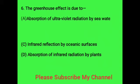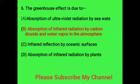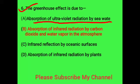Question six: the greenhouse effect is due to - option A: absorption of ultraviolet radiation by seawater, option B: absorption of infrared radiation by carbon dioxide and water vapor in the atmosphere, option C: infrared reflection by oceanic surface, and option D: absorption of infrared radiation by plants. Option B is the correct answer.